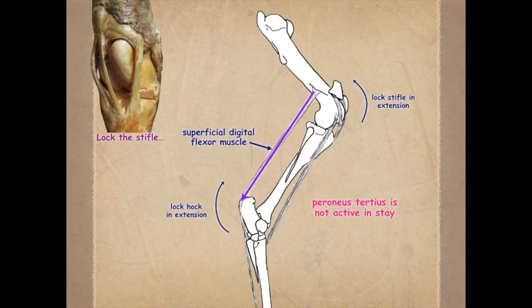Notice that the peroneus tertius is not part of this stay apparatus. When we have locking of the stifle and therefore hock, the tension is on the superficial digital flexor muscle, and the peroneus tertius is very lax at this point. On occasion we can get a rupture of the peroneus tertius. This usually occurs when a horse is walking and as the stifle is flexed, the limb slips caudally. The most characteristic feature is the ability to both extend the hock and flex the stifle simultaneously. Usually these animals are lame but able to bear weight. Conservative treatment — prolonged rest, usually about four months — is used, and the prognosis is favorable.